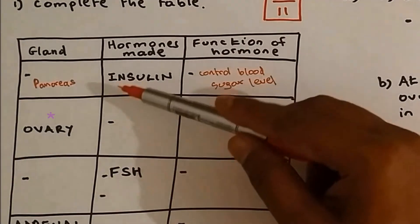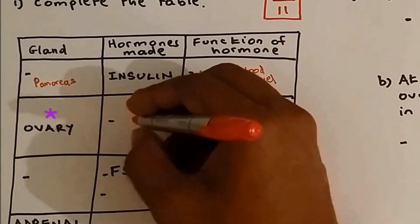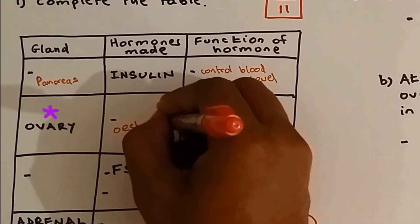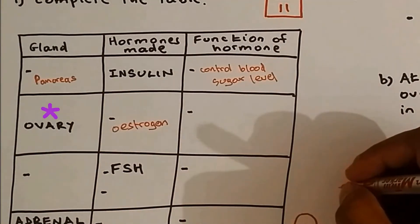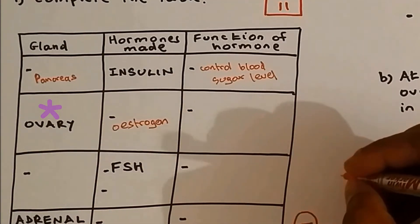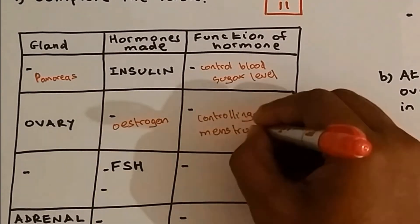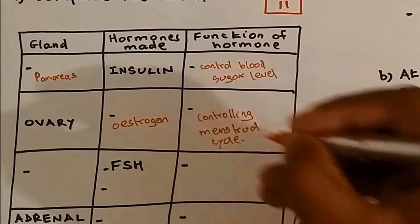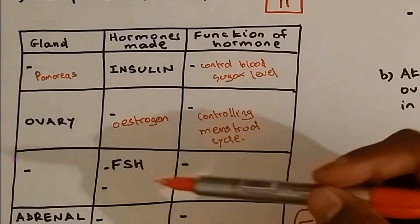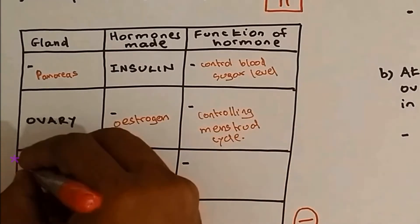What hormone is made from the ovary? The hormone made from the ovary is estrogen. What's the function of estrogen? The function of estrogen is to control the menstrual cycle. Which gland makes FSH? The gland which makes FSH is called the pituitary gland.